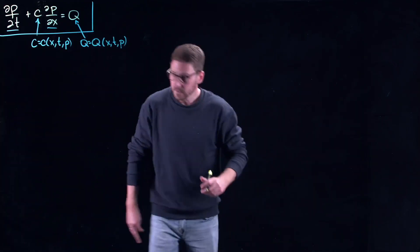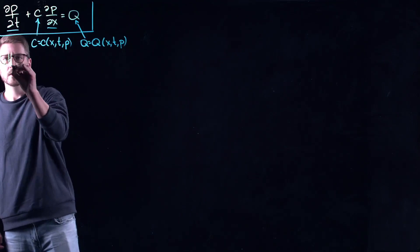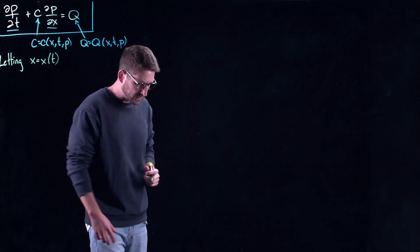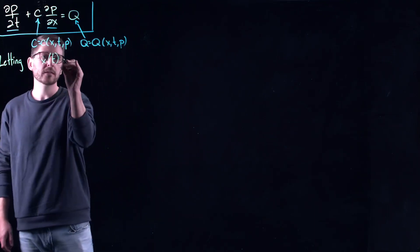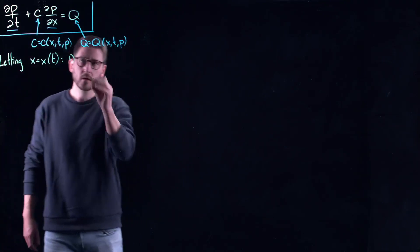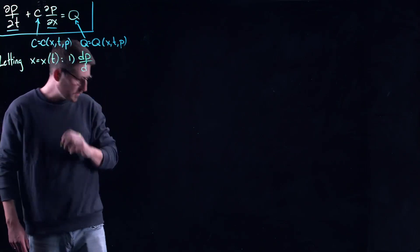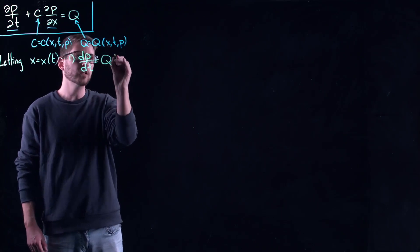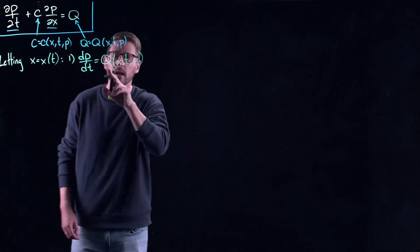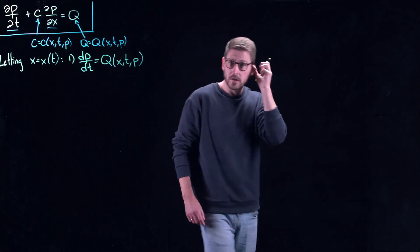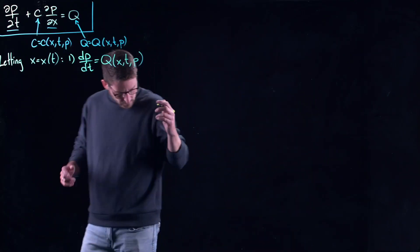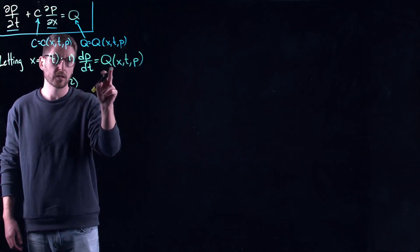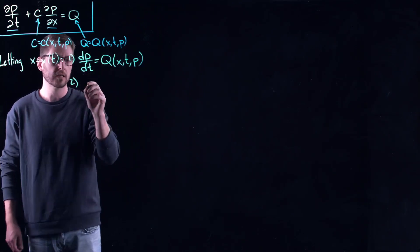By letting space move along these characteristic curves, this gives us two equations. The first equation is my p equation which tells me that the total derivative over t is equal to this q function. And we saw that when q is equal to zero, the solution stays constant along the characteristics. This is how the solution changes along said characteristics.